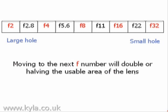So we get 2.8, 5.6 — which is of course twice 2.8 — F11, which is nearly twice 5.6, and then F22. These are the major numbers that you want to remember. The important thing to think about is that if we move from one number to the next number, we are either halving or doubling the area of our lens, and therefore doubling or halving the amount of light going into our camera.